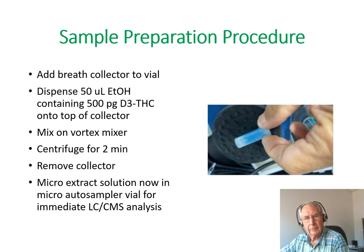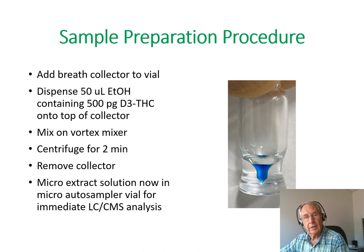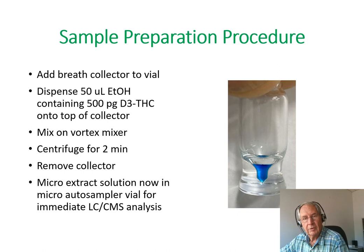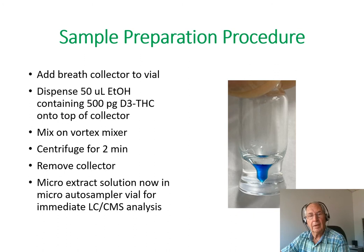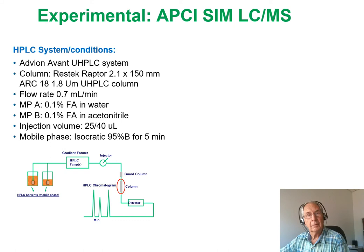The collector actually rotates within the vial, giving extensive extraction exposure with just 50 microliters of solvent. The whole reason for using 50 microliters is to directly inject that extract without blow-down. After vortex mixing and centrifugation, the collector is removed from the vial, leaving the extract at the bottom — shown here in blue dye simply to make the ~50 microliters visible. This microextract solution is now in the micro-autosampler vial for immediate LC compact spectrometry analysis by selected ion monitoring LC-MS.